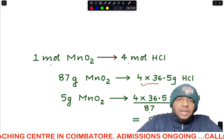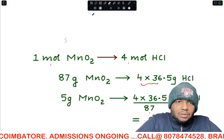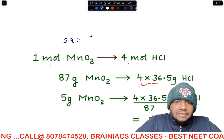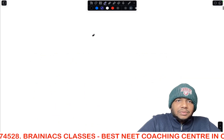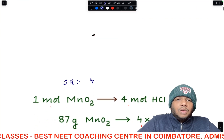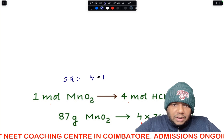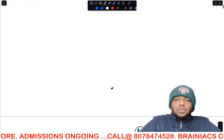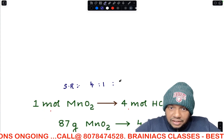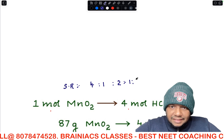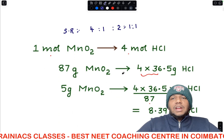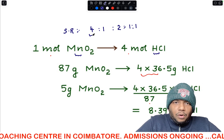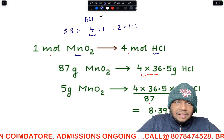From the equation, the stoichiometric ratio is 4 mol of HCl to 1 mol of MnO₂ — that is 4:1. You can also note the ratio for products (2:1:1) but we are not interested in products here. From stoichiometry, 4 mol of HCl is needed for 1 mol of MnO₂. The question gives 5 grams of MnO₂ and asks how much HCl is required.